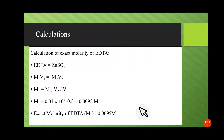Calculation of exact molarity of EDTA: since EDTA reacts with zinc sulfate, M₁V₁ = M₂V₂. To calculate the exact molarity of EDTA (M₁), use M₁ = M₂V₂ / V₁. M₂ is the molarity of zinc sulfate. Using the constant burette reading, the exact molarity of EDTA is calculated to be 0.09095 molar.